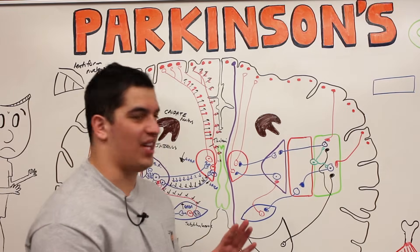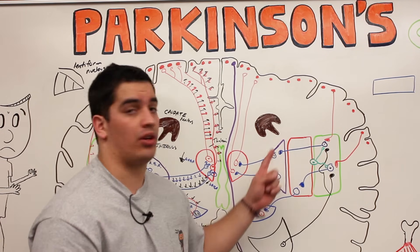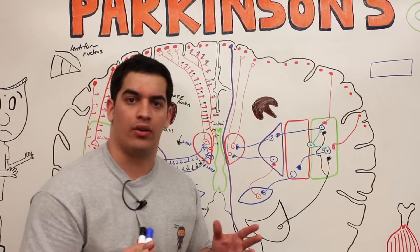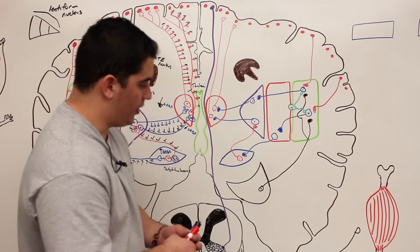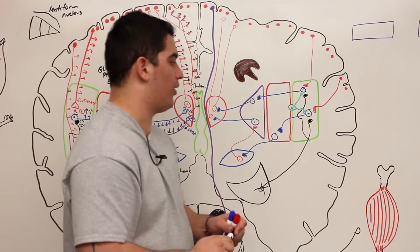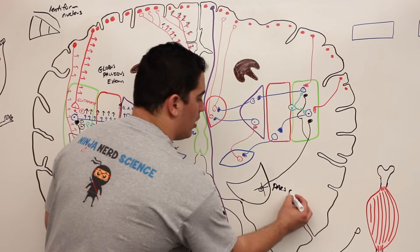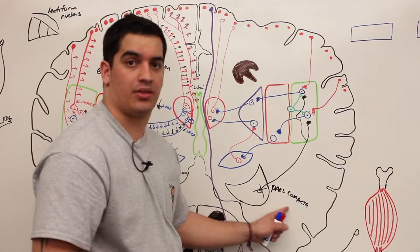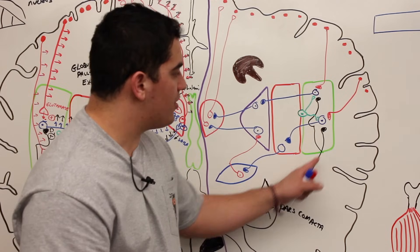Now that we've gone over the normal physiology, let's go over what happens in Parkinson's disease and how that affects the normal circuitry. First, we'll talk about some hypothetical theoretical causes, but let's assume that there's damage to the dopaminergic neurons within the substantia nigra — specifically from a region called the pars compacta, where a lot of these dopaminergic neurons are concentrated.